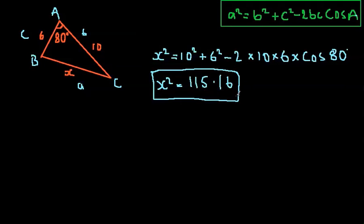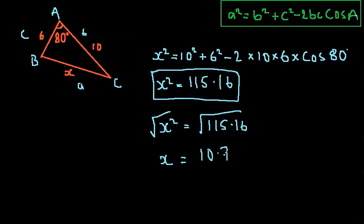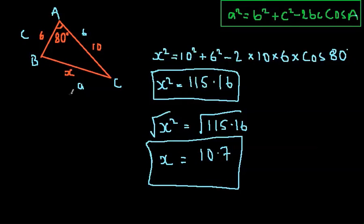We need to square root x², and square root 115.16. And then we get x = 10.7 to three significant figures. Now, this is our final answer. So, x = 10.7. So, that's a mistake people do sometimes. They just leave it up into this stage. Remember, we need to get x. So, we need to square root that x², and our final answer will be 10.7.